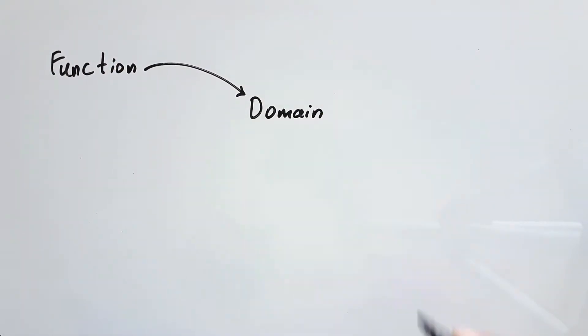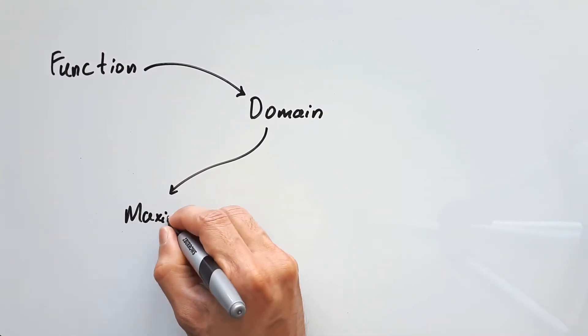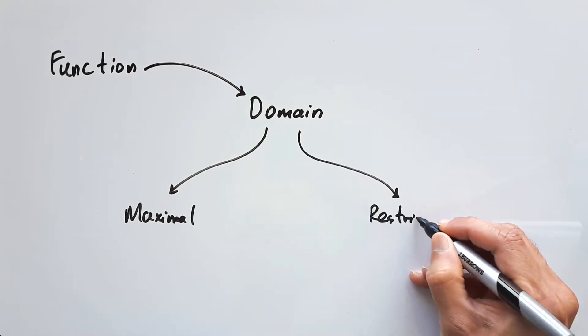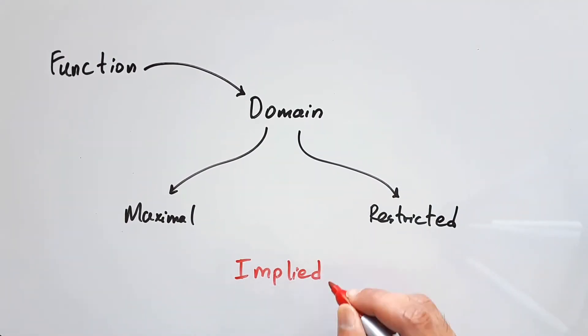Normally when you're given a function, you're also given its domain. And the domain can either be maximal or restricted. If you're not given the domain, then it's going to be implied by you.